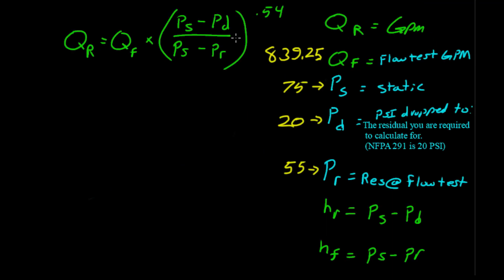So, first off, we'll work this through one time to see if we're getting the same answer on this equation and the next one. So, to go ahead and rewrite this equation, we will go QR equals QF. Our gallons per minute was 839.25 times, put our parentheses there, PS. So, our static pressure was 75 minus our desired drop 2 pressure, 20 PSI, divided by. It's a fractional line. It means divide by.